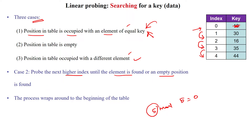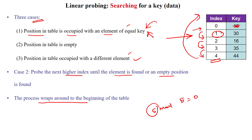If we reach the end of the hash table, then we have to wrap around to the starting index of the table. We have to again check from the starting index until we reach where we started — in this case, index number 0.